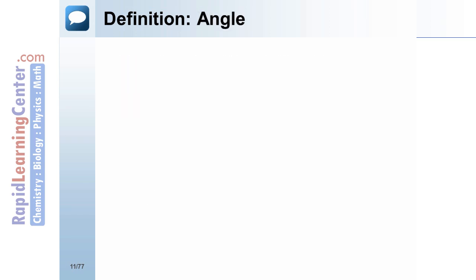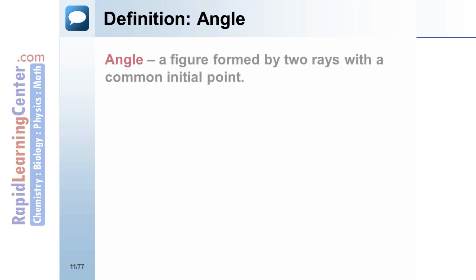Definition: Angle. An angle is a figure formed by two rays with a common initial point. In the figure, rays HP and HF share a common initial point. The intersection of HF and HP at point H forms angle FHP.